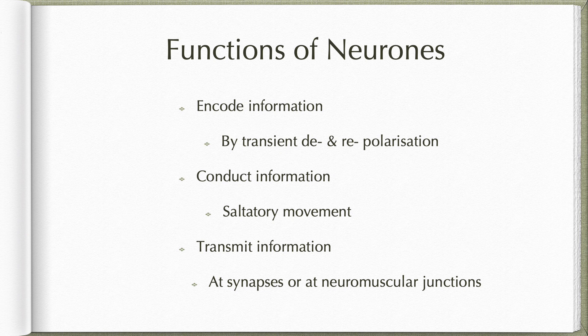Functions of neurons are basically to encode information by transient depolarization and repolarization, conduct this information by saltatory movement, and transmit the information from one neuron to the next at synapses, or from one neuron to an effector organ like at the neuromuscular junction to the muscle.